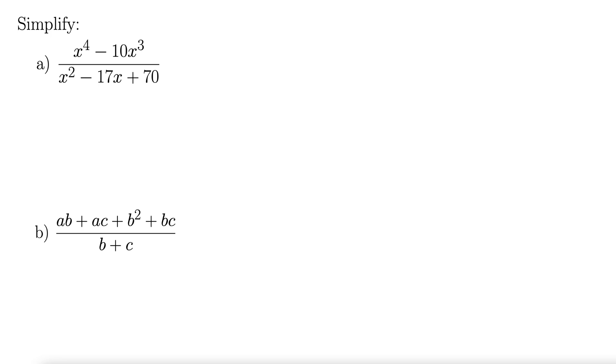And the first step of factoring is always to look for the greatest common factor. So let's check out this first one here up in the numerator. We have x to the fourth minus 10x cubed. I'm thinking we can factor out a greatest common factor of x cubed, leaving behind x minus 10.